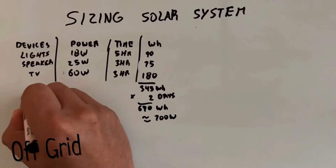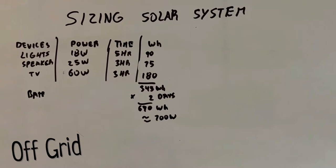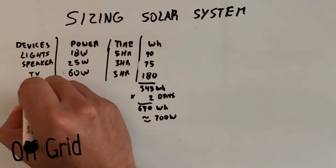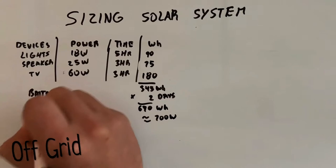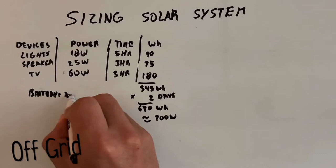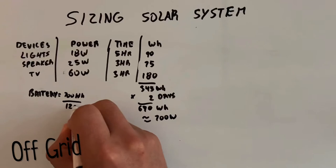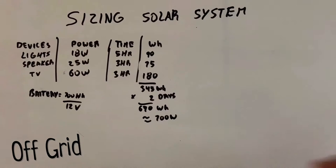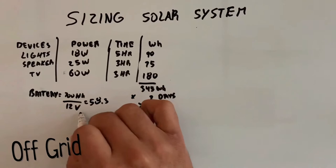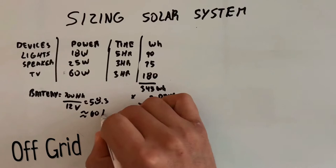So we need a battery that can handle 700 watts. The average battery is about 12 volts, so for this scenario, let's say you have 12 volts. So to get the amperage for your battery, we take the 700 watt hours that we got, and we divide it by 12.